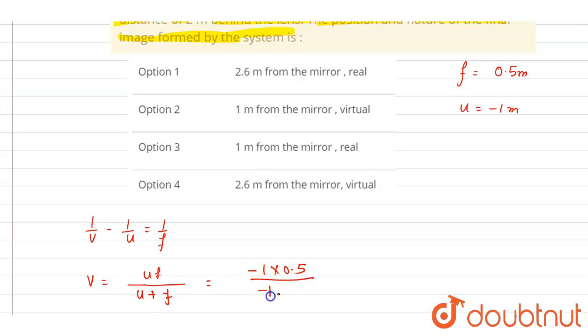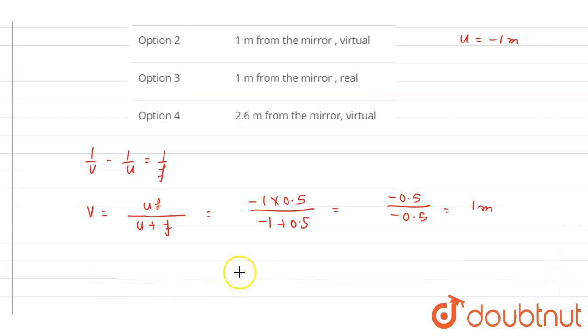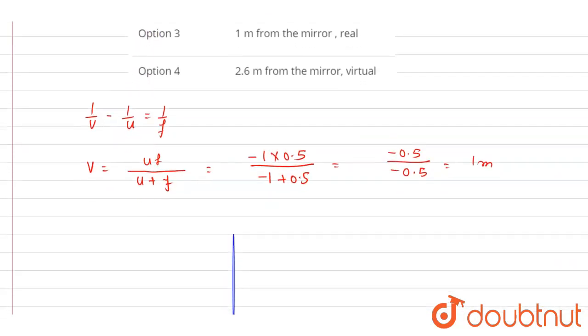So if you see it is 0.5 by 0.5, so it is one meter. So one meter will be the distance of the image from the lens. Now the plane mirror is at a distance of two meters. So if I draw the diagram, let's say this is the convex lens.